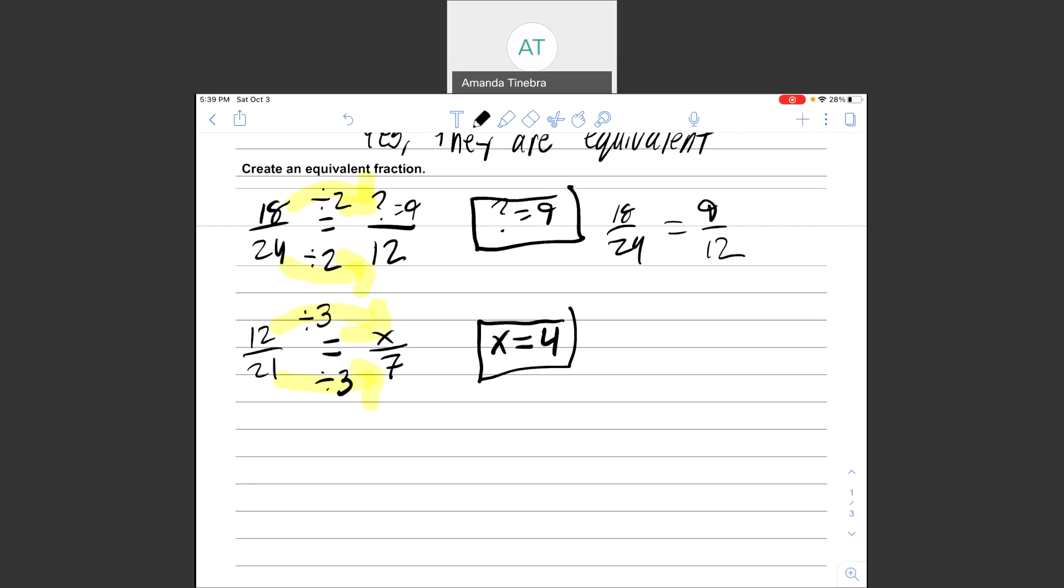Another example I could do is that 3 over 7 equals 18 over y. Now here when I look, I say, okay, I'm not sure 7 and y, what that relationship is, but I see that I have 3 and 18. In this case, I'm multiplying to go from 3 to 18. 3 times 6 is 18. That means I need to do the exact same thing on the bottom—7 times 6. And that will tell me that y equals 42.